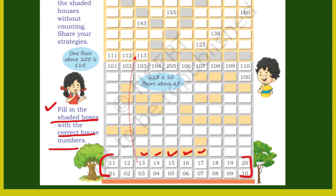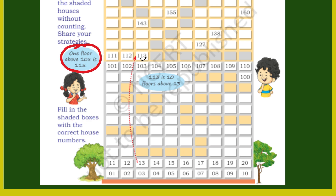So, सबसे पहले यह girl कह रही है: one floor above 105 is 115. अगर 105 यहां है तो इसके एक floor उपर 115 है, क्योंकि 10 ज़ादा है उपर. ऐसे ही नीचे यहां 13 दिया हुआ है — 10 lines उपर गए, तो 113 is 10 floors above 13. मतलब एक number के उपर वाला जो floor है वो उसमें 10 add करने पर आएगा.